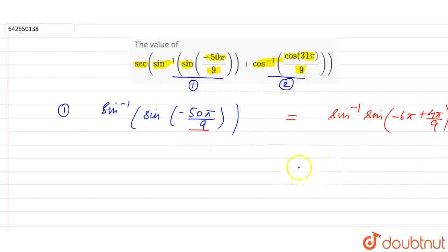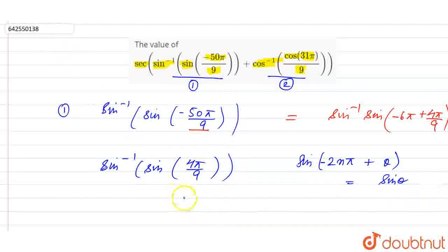We know that sine of minus 2n pi plus theta. So, we have sine inverse of sine of minus 4 pi by 9. And we know that sine inverse of sine x is equal to x. So, we have minus 4 pi by 9 from here, the value for 1.